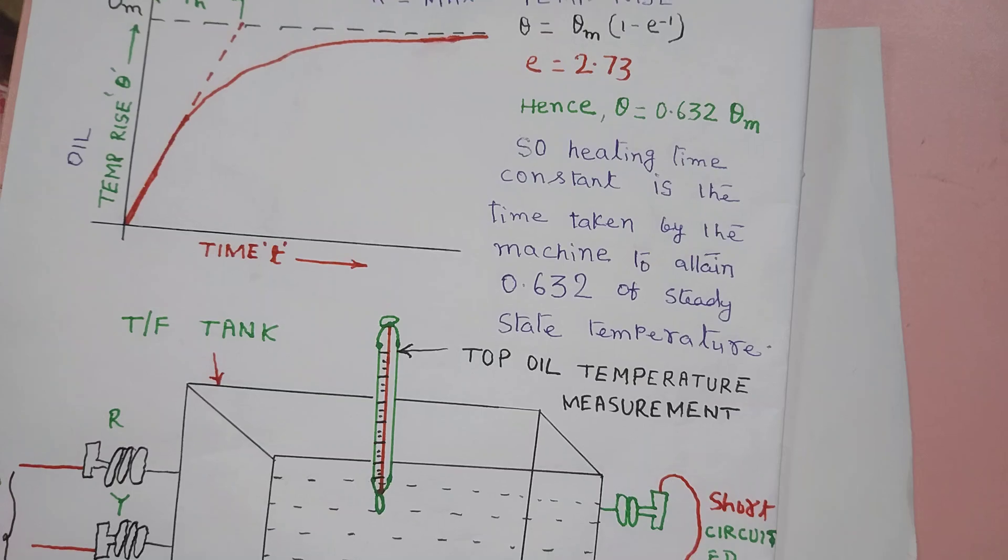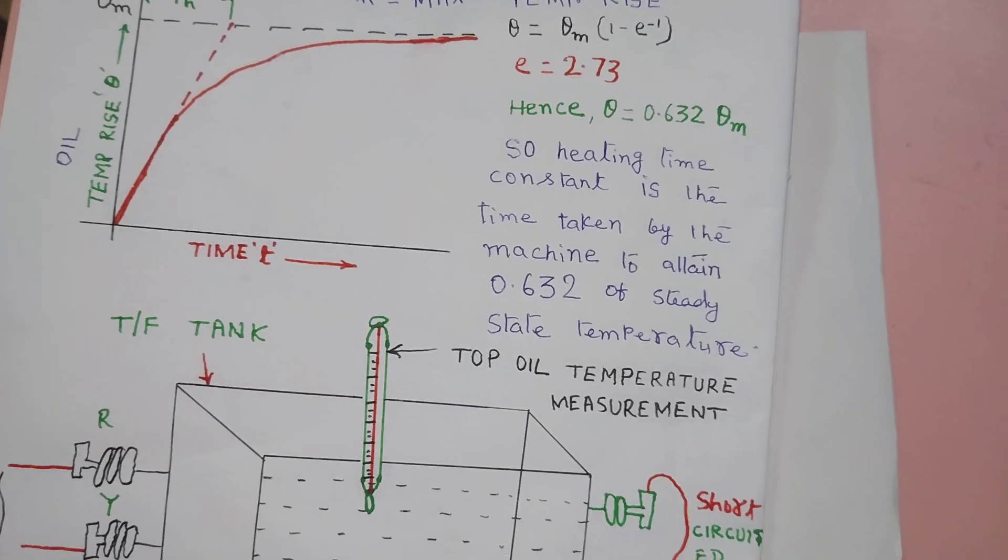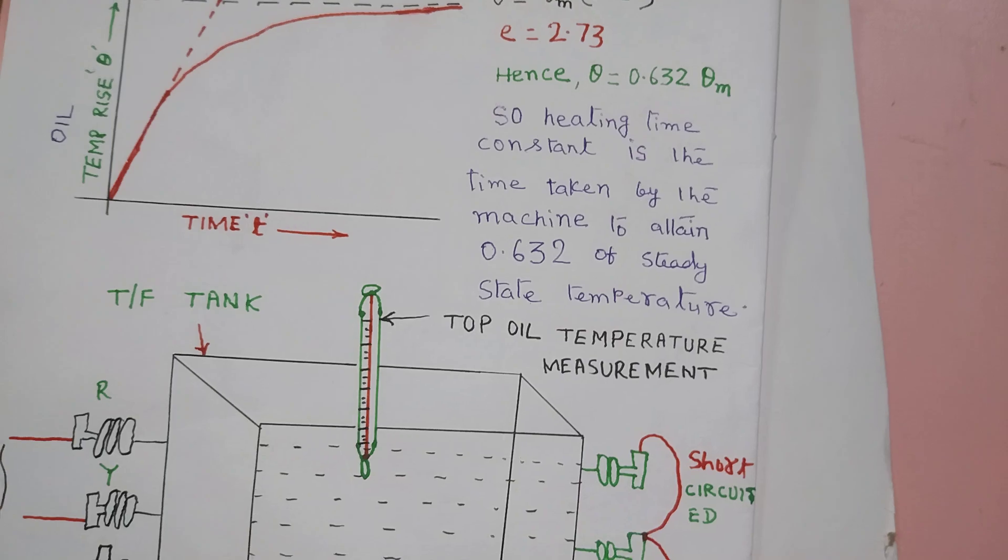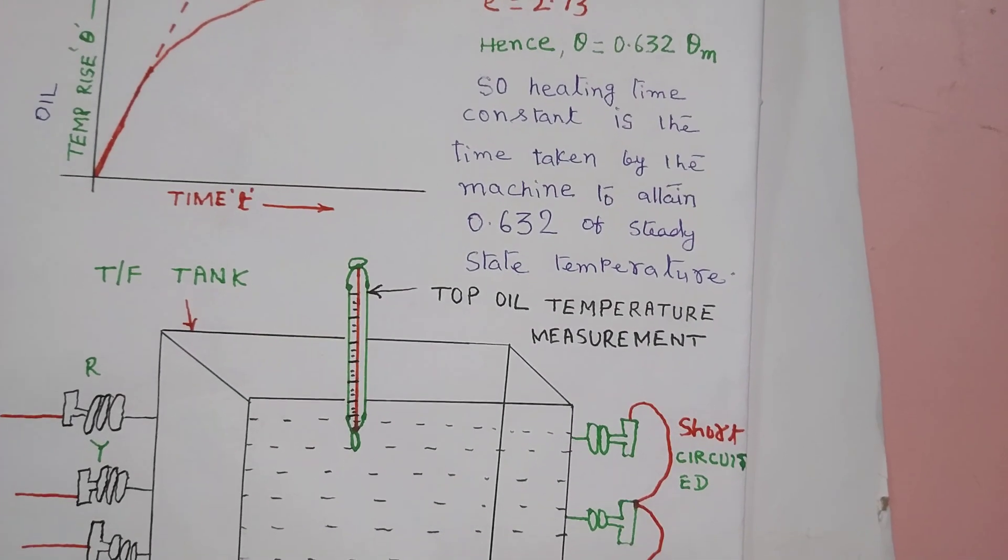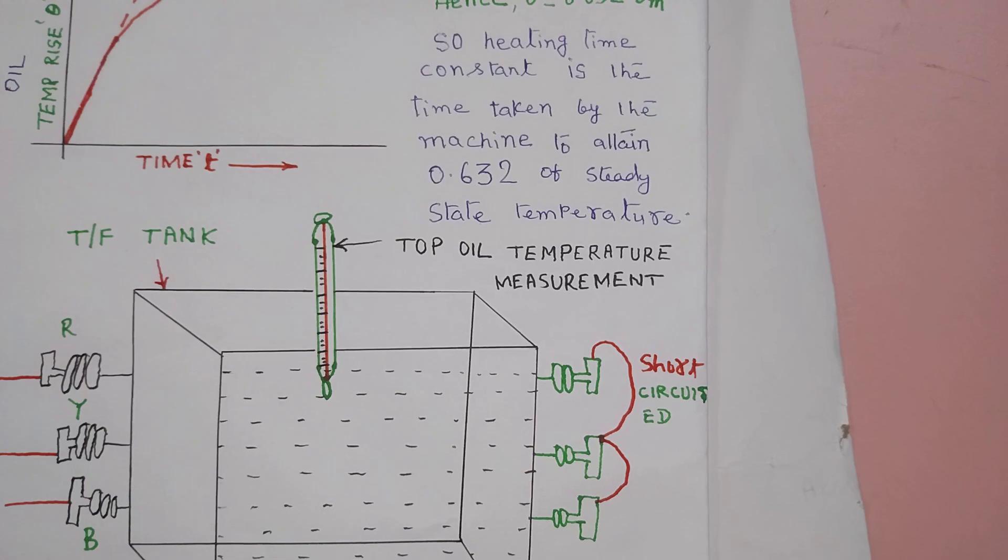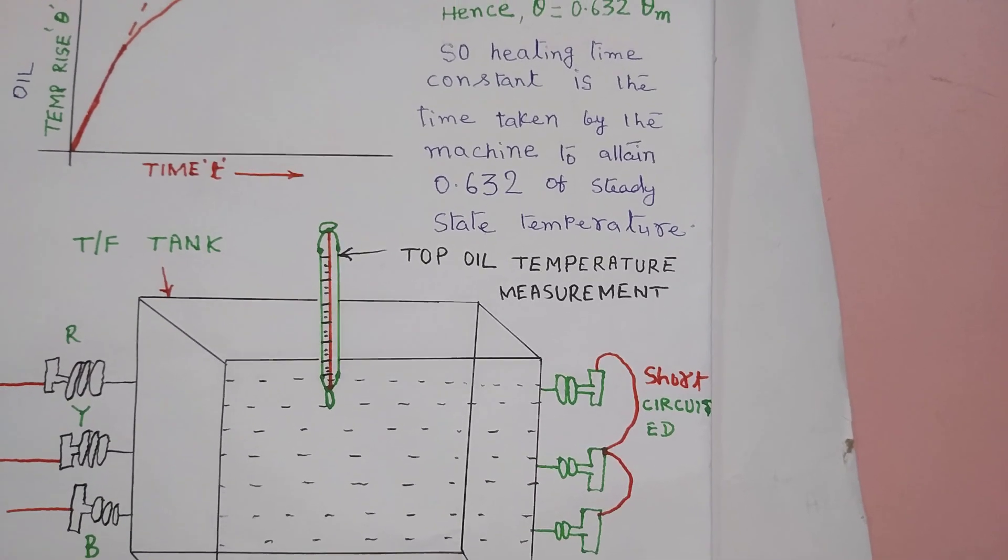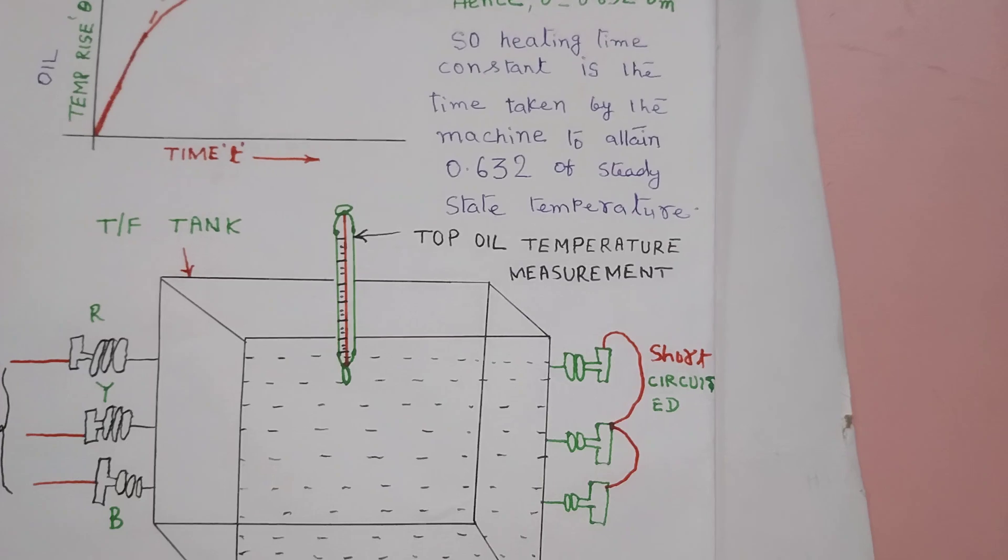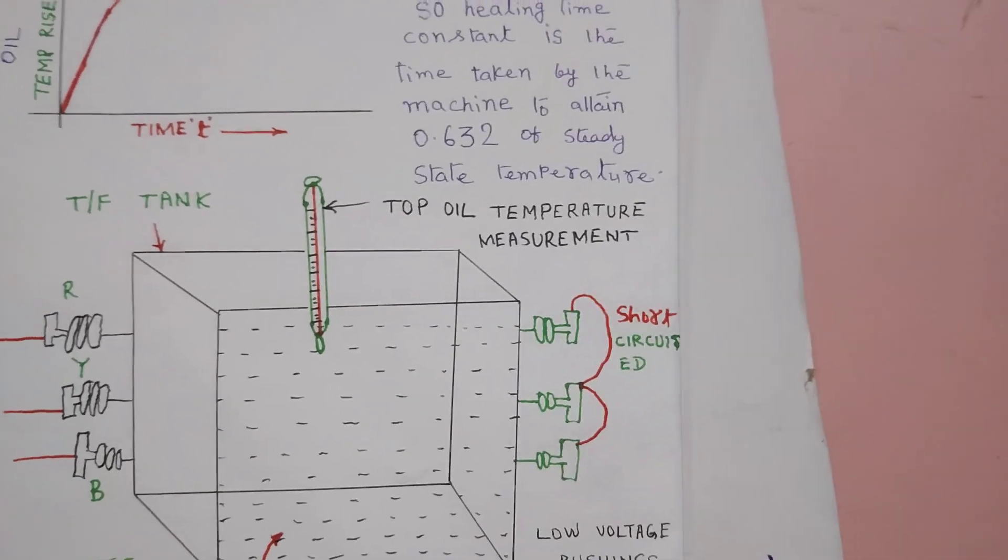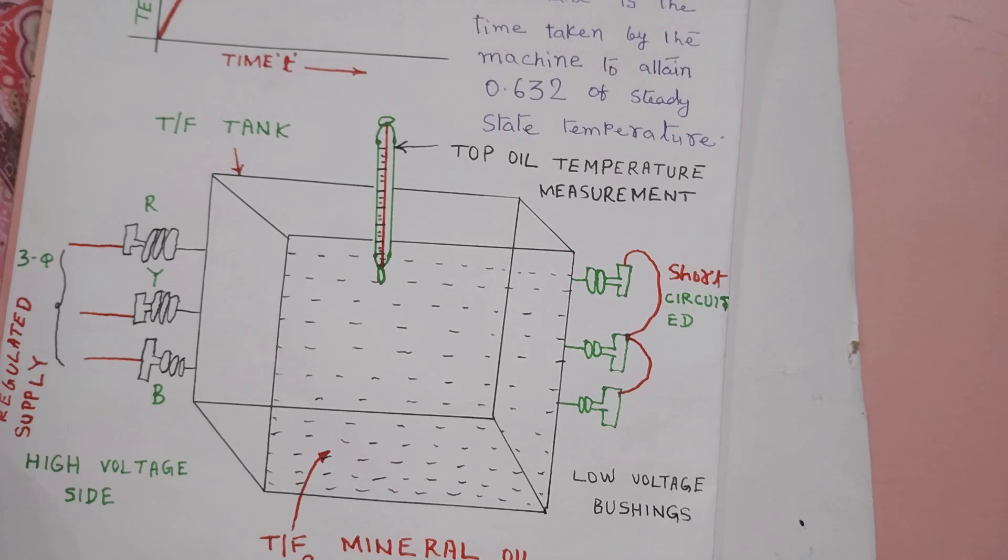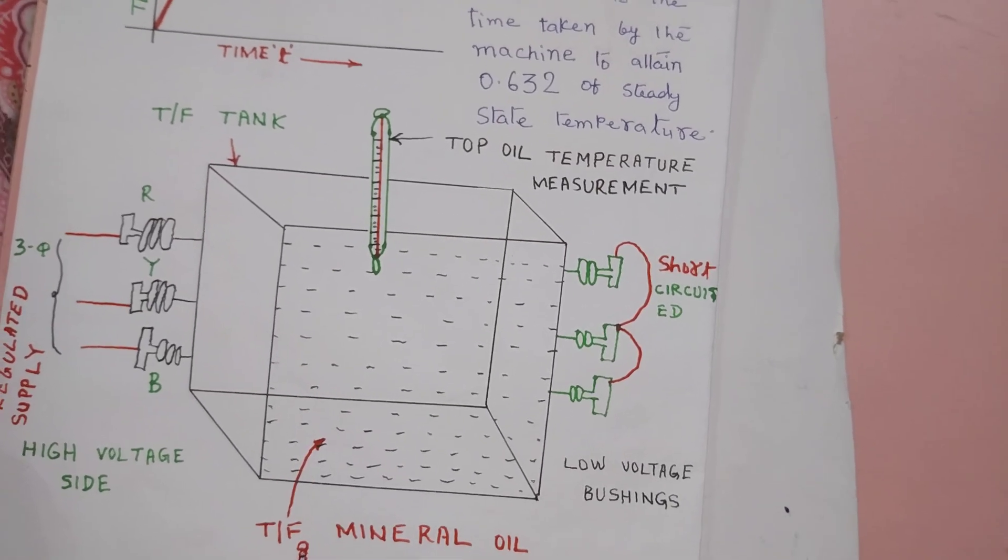One of the reasons of failure of large number of transformers in the country is poor specification and poor predispatch inspections. Before taking delivery, although it is a type test, but before delivery the purchaser should insist for heat run test of the transformer.